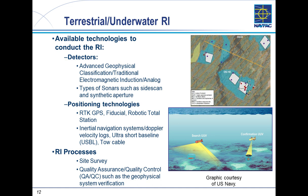When you get to executing the work, there is a chapter on conducting the terrestrial or underwater remedial investigation. For terrestrial work, it covers Advanced Geophysical Classification, EMI detectors, and analog detectors. For underwater, different types of sonars such as side scan and synthetic aperture. It also covers how you find your position: terrestrially, things like RTK GPS, fiducials, and robotic total stations; underwater, inertial navigation coupled with Doppler velocity logs, ultra short baseline acoustic methods, tow cable, and layback calculations. RI processes such as site survey, quality assurance, quality control, and GSV are also discussed.